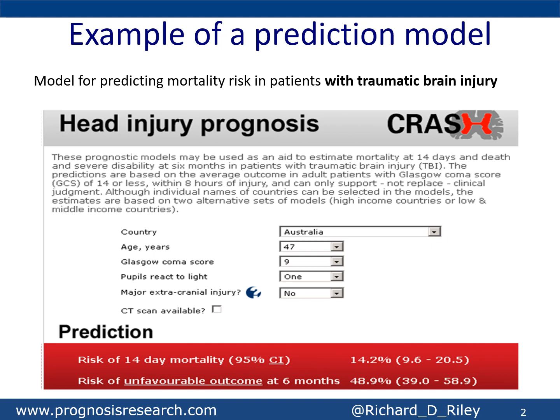So what do we mean by a prediction model? Well, it's essentially a tool — usually a statistical equation, but it may be a machine learning algorithm — that utilizes multiple factors, also known as predictors or prognostic factors, in combination to produce estimates of risk or outcome values for an individual person.